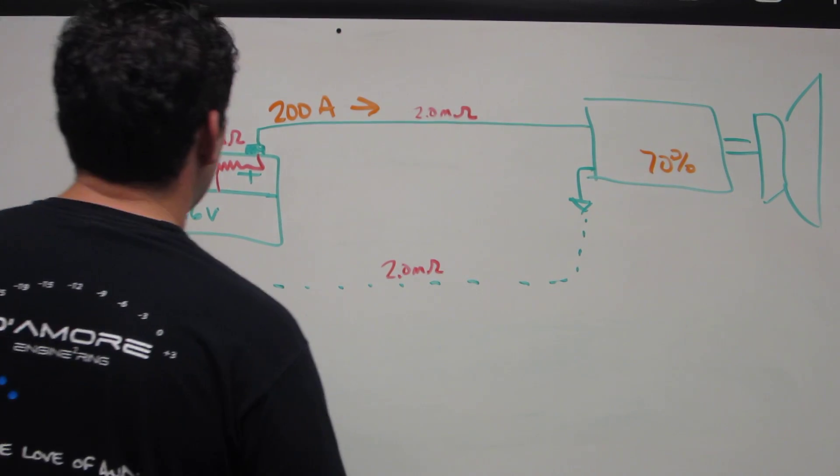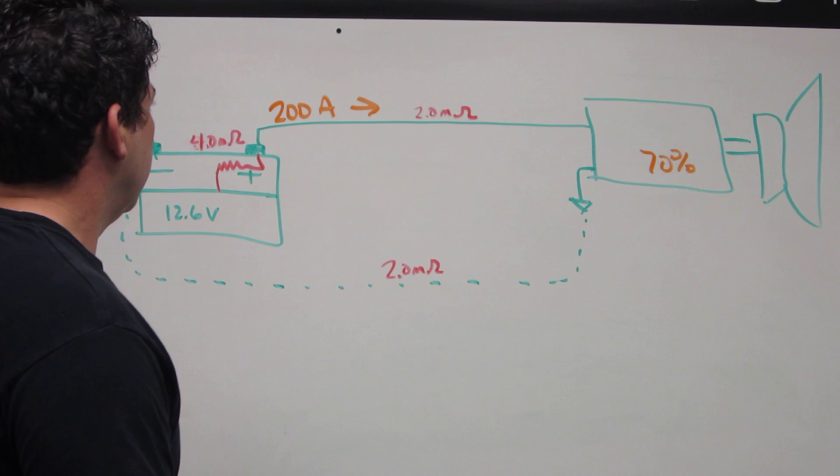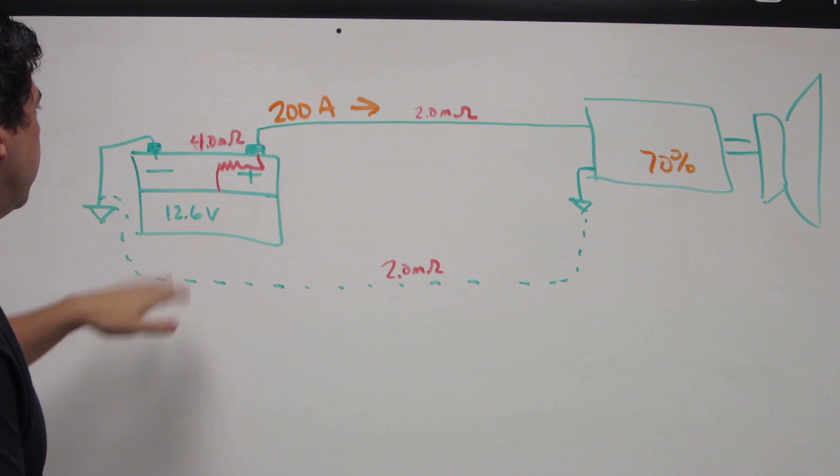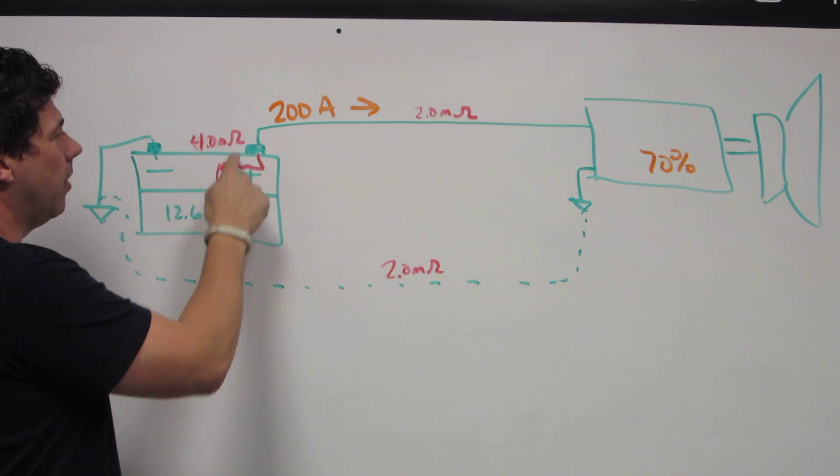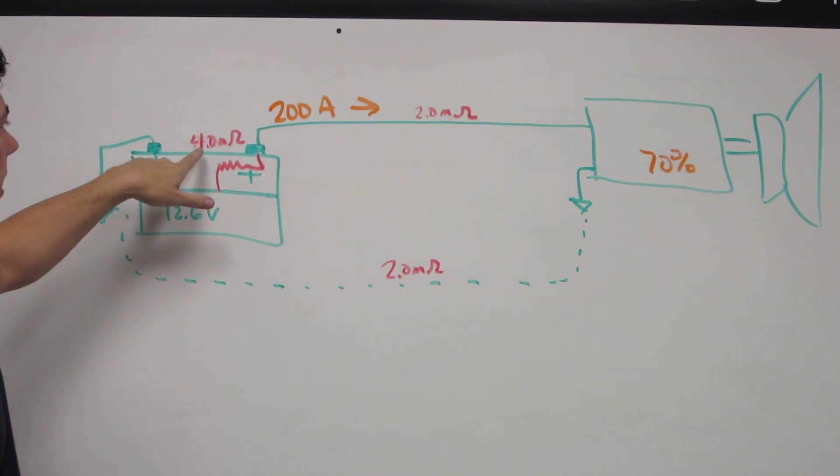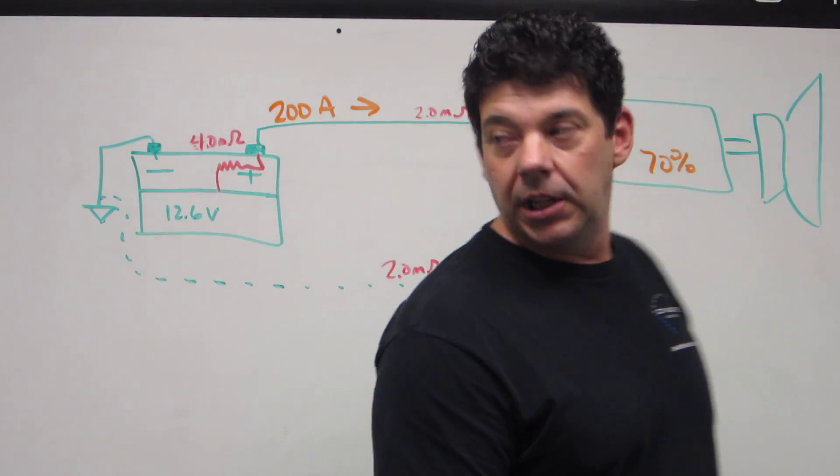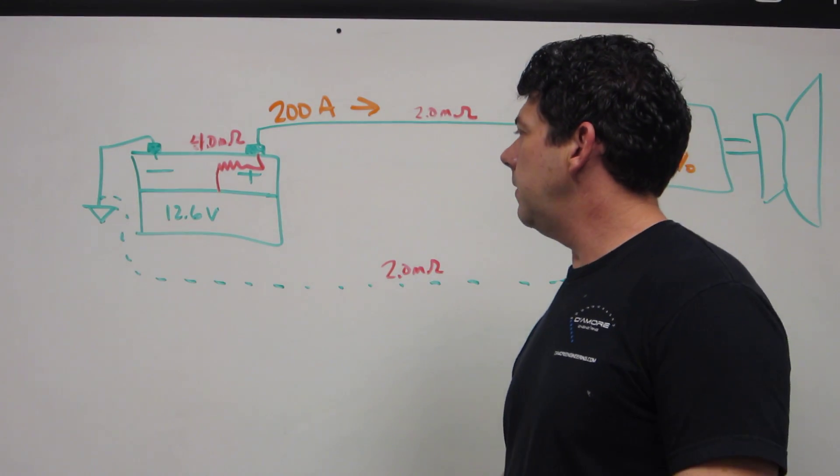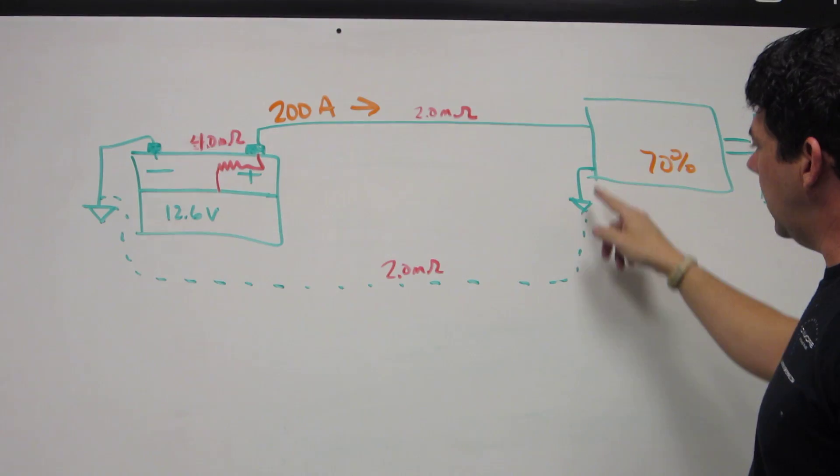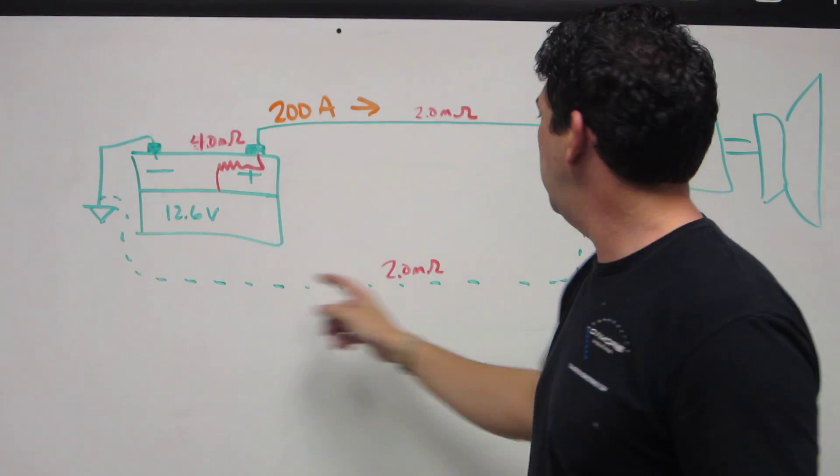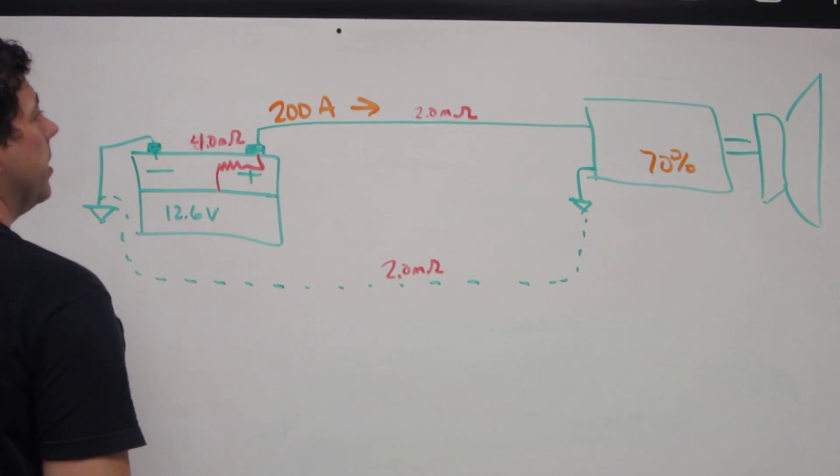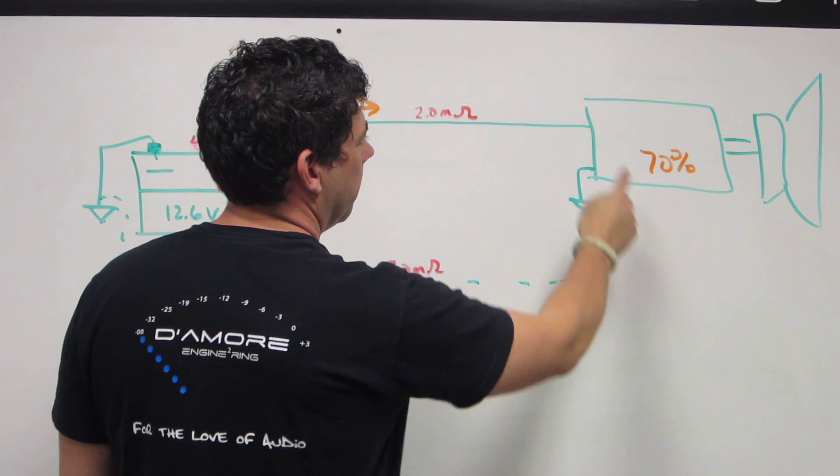Alright, so that takes us to the homework problem for this installment. Here's what we have. We have a battery, 12.6 volt lead acid battery. It has some internal resistance to it of 4 milliohms. This is inside the battery between the actual cells and the output terminals. This is a pretty reasonable number for a battery, a decent lead acid battery that's pretty fresh. We have our piece of AUT gauge copper here, 20 feet long that's got 2 milliohms of resistance. We have the same amount of resistance on the ground return path back to the battery from the amplifier. We're assuming the amplifier is drawing 200 amps and it's 70 percent efficient from input to output.